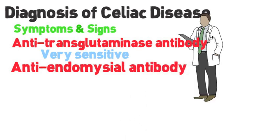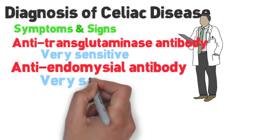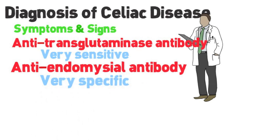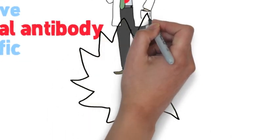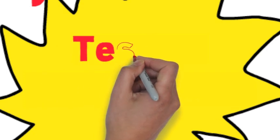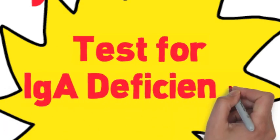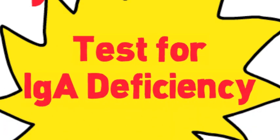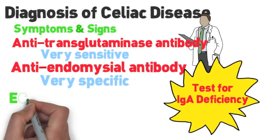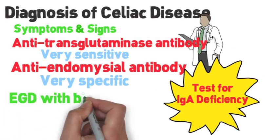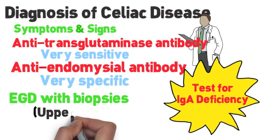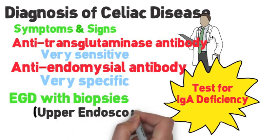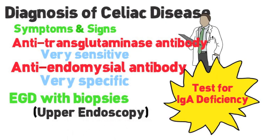Keep in mind, many people will have IgA deficiency — a protein involved in your immune system. If you do have a deficiency in this protein, your antitransglutaminase antibody studies will be automatically negative, so you may get false negatives in a person with IgA deficiency. If your antibodies come back positive, the next step is an EGD or upper endoscopy, taking biopsies to see if the tissue in your bowel is consistent with celiac disease.